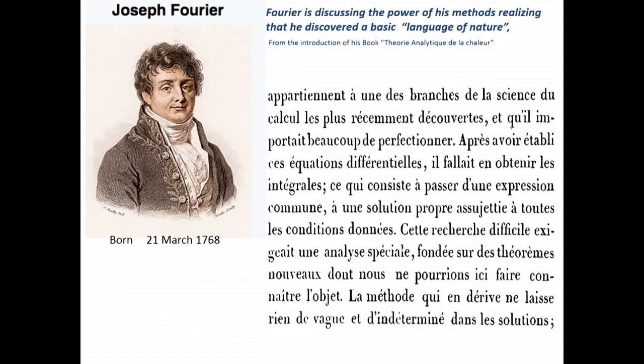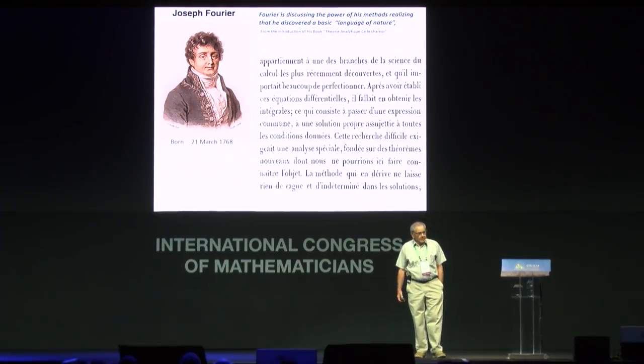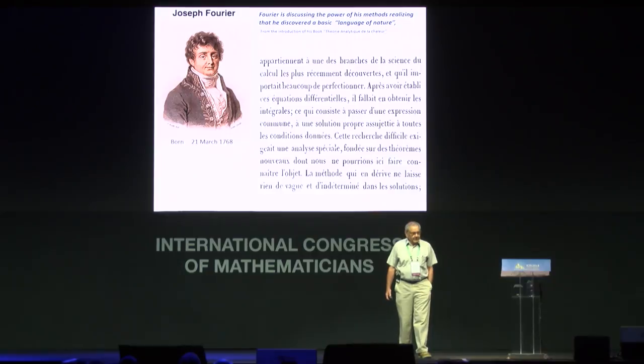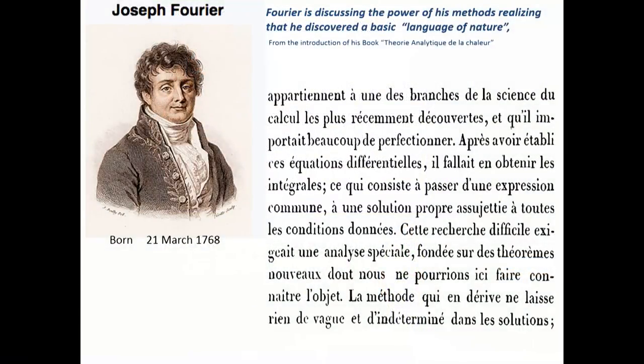Let's start with the past. This year is 250 years since the birth of Fourier, and about 200 years ago he wrote his book on the analytic theory of heat. This text, which I extracted from the book, basically could have been written today. What he says is that the usual way of integrating equations, as Newton and others were doing, are just not sufficient. If you want to describe heat propagation or solve the heat equation, you need a new language — and that new language is the Fourier series.